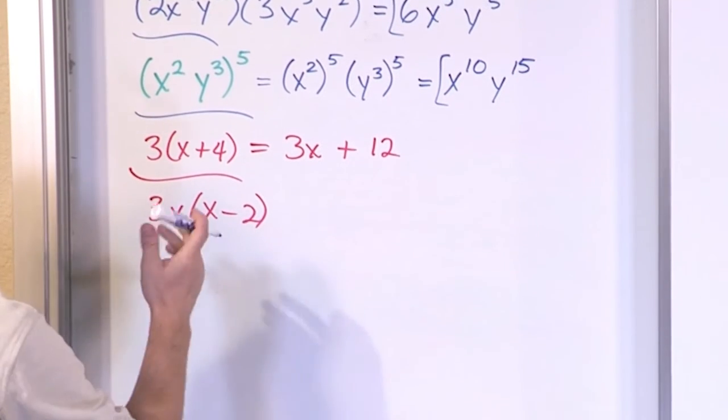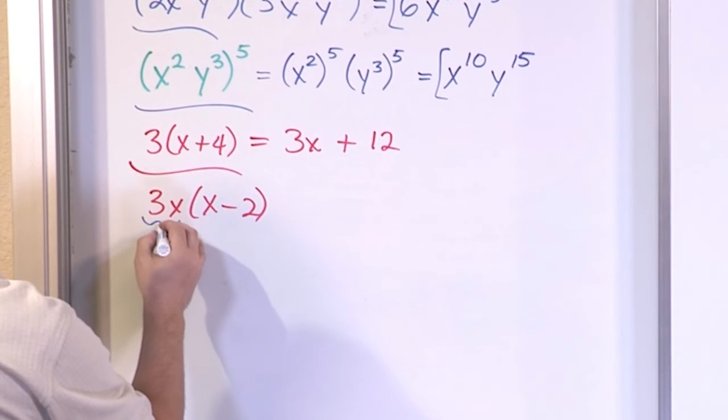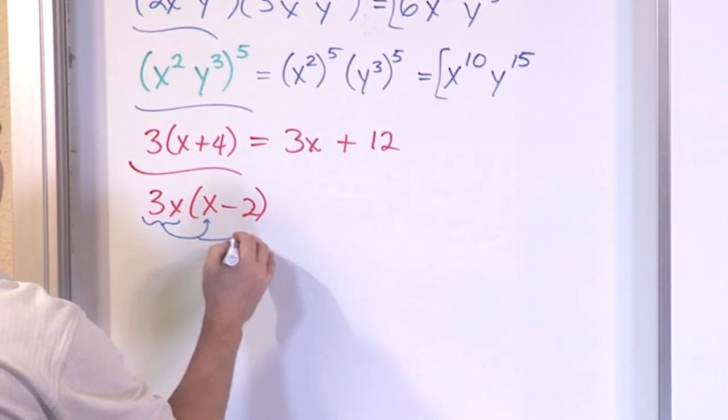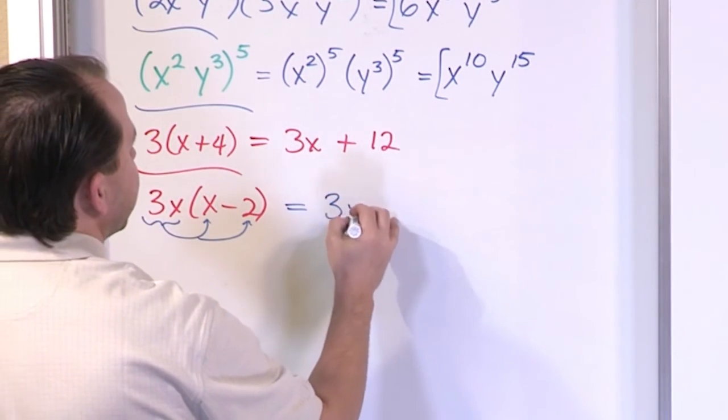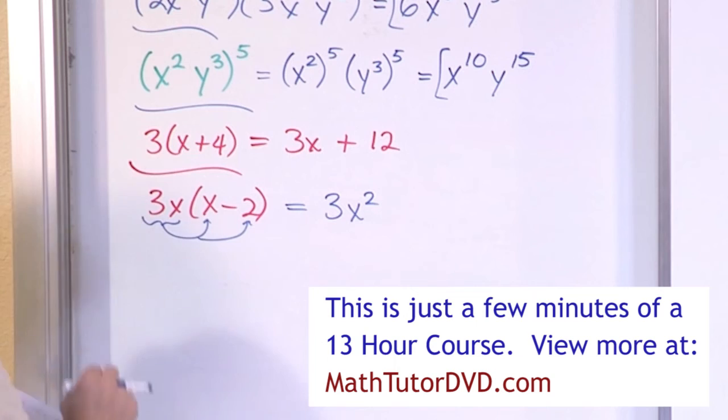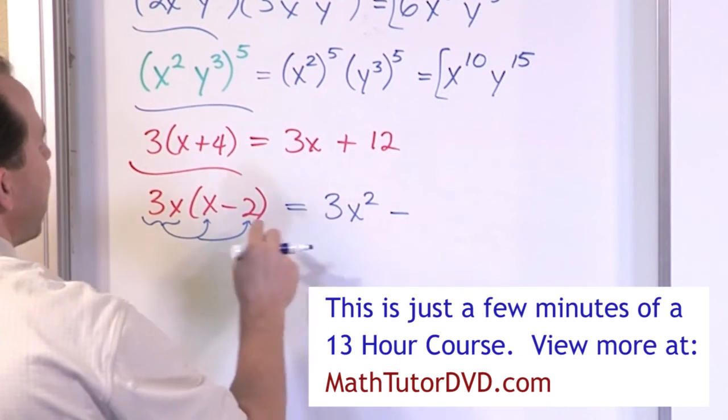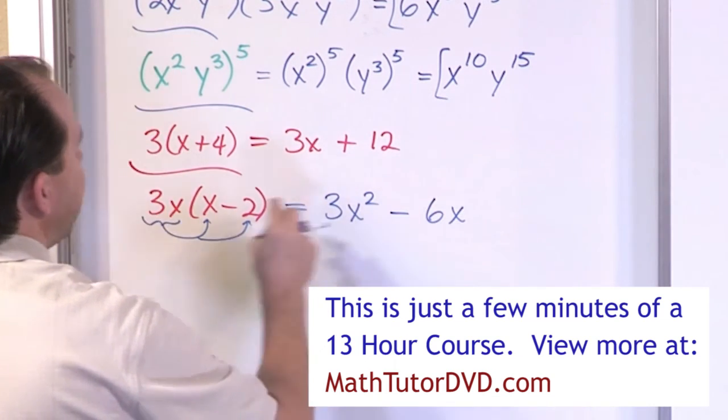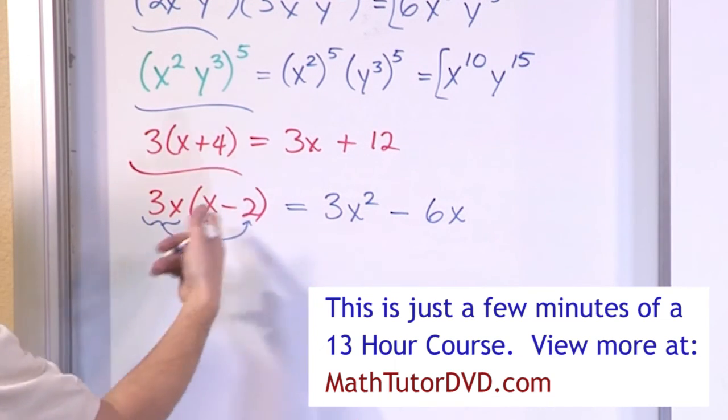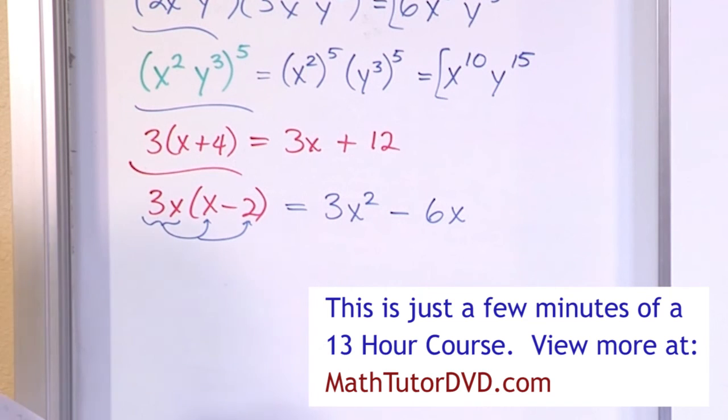what we're doing here is what we've done all along. We take everything outside and distribute it in to everything on the inside. So you're going to get 3x times x is 3x² because x times x is x². And then you have a minus sign that comes from here. 3x times 2 is 6 and x comes along for the ride because there's no other x to add it to.